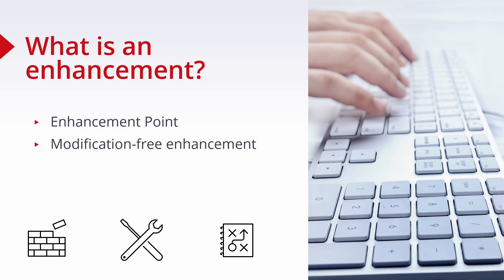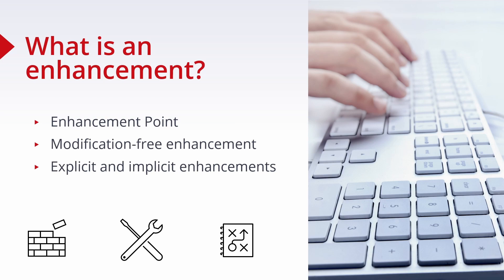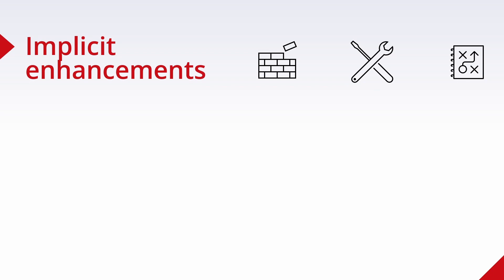A distinction is made between explicit and implicit enhancements. Explicit enhancement points were planned by the SAP programmer and explicitly integrated in the ABAP code. You can insert your own program code at these defined points. Implicit enhancement points, on the other hand, do not have to be planned since they automatically exist at certain points in the program.